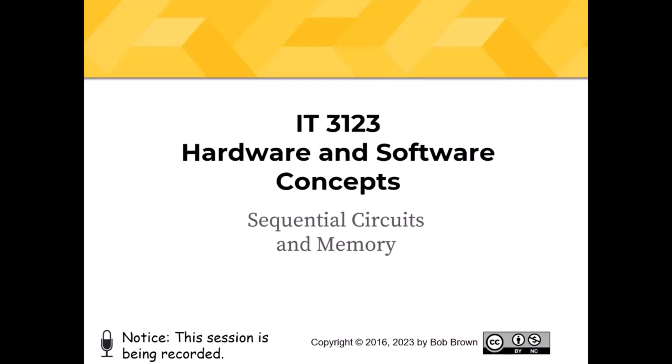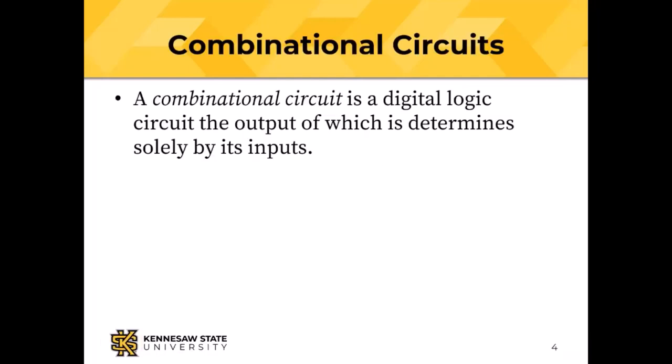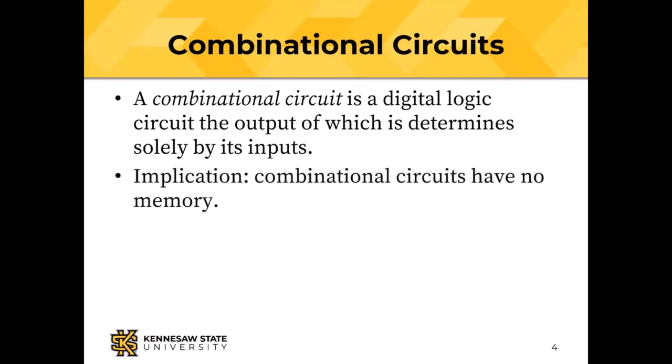Good morning, everybody. Start of a new week. As we said last time, a combinational circuit is a digital logic circuit for which the output is determined only by its inputs. If the inputs change, the output changes to reflect what that combinational circuit computes. Different combinational circuits compute different things — we saw an adder, decoders, multiplexers. The implication is that combinational circuits have no memory.